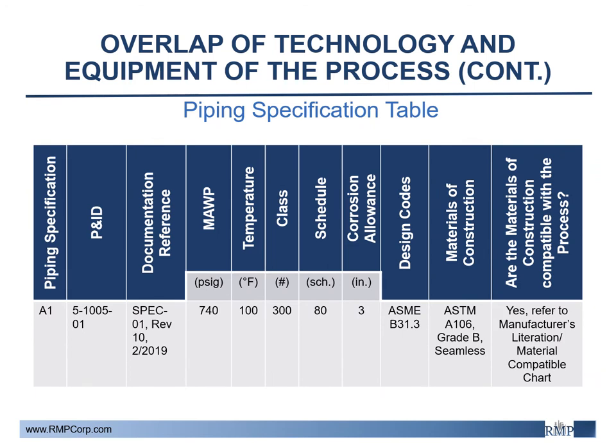Similarly, this chart should also be done for process piping and piping components such as valves. The example shows similar information to the pump but with specific parameters that are relevant to piping, like corrosion allowance. Documentation is also referenced in this table, and since piping is something that is analyzed more methodically for the system as a whole, referencing system piping calculations and documentation should be included as well.